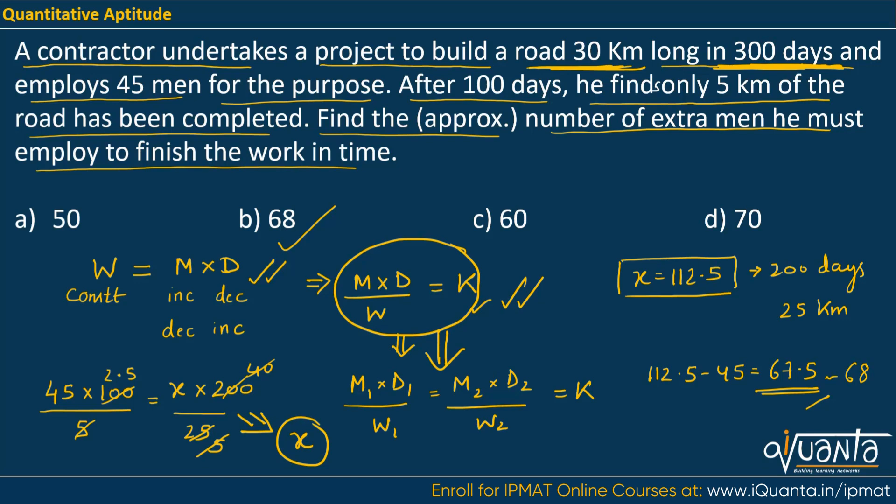Now there will be some question in which these men will be working for specific hour in a day. So then the relation will transform to M1 D1 H1 upon W1 will become equal to M2 D2 H2 upon W2. H is the number of hours they are working per day. So this approach is through the relations.